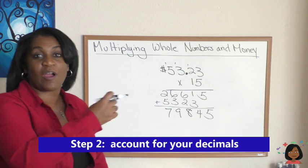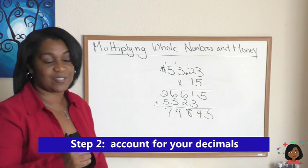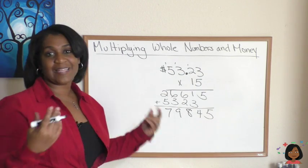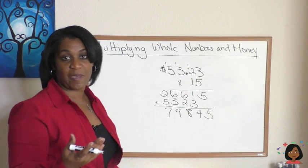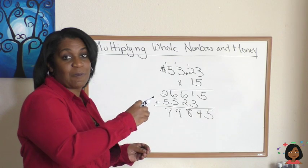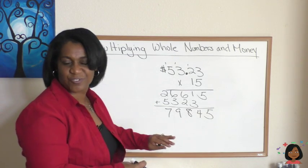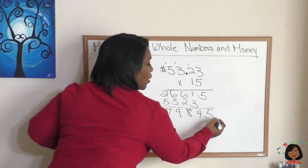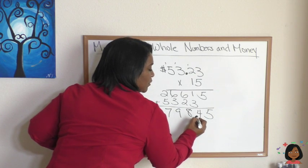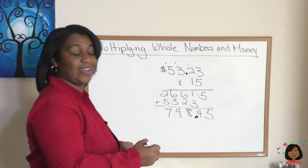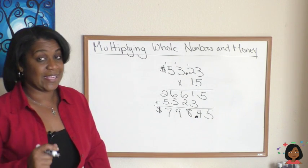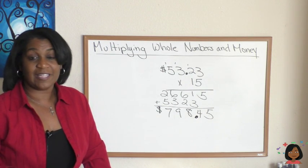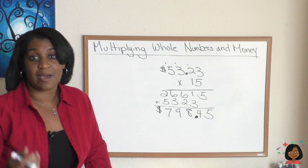Are we finished? No. The rule here is now we account for our decimal and dollar sign. We look to see how many decimal places we have in our problem. We have two spaces, so we take those two spaces and transfer them down to the bottom: one, two. Now we can add our dollar sign. So our answer is $798.45. That's the only difference when it comes to money: you do your multiplication like normal, but then you account for your decimals at the end.